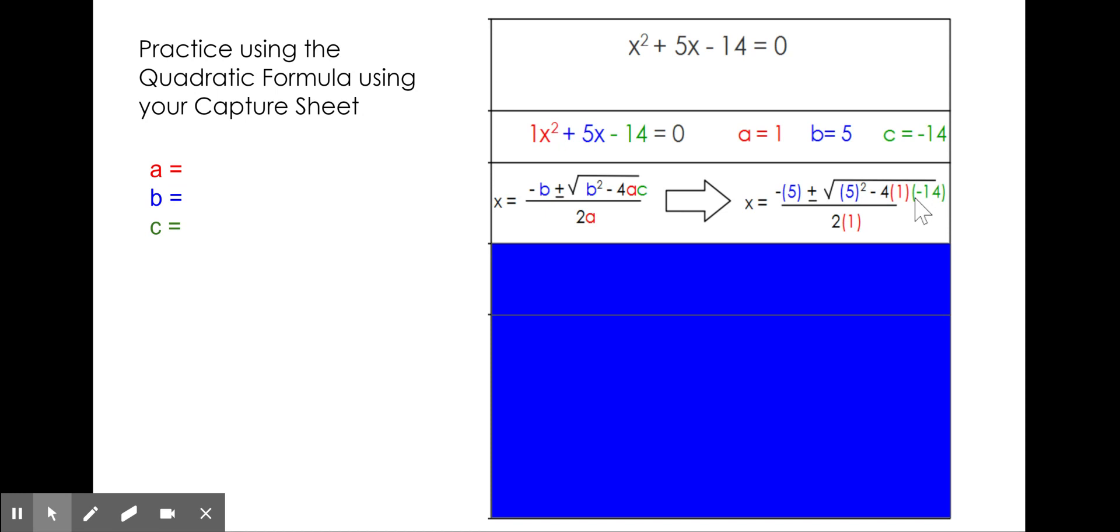At this time, simplify the discriminant, the part that is underneath the radical sign, and the denominator in step number 3. Pause the video while you do so.